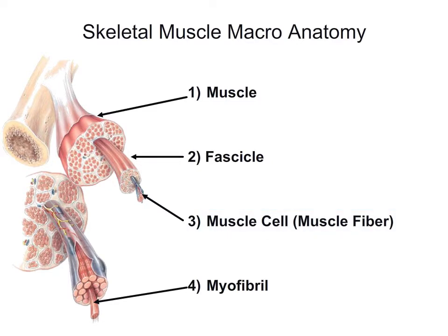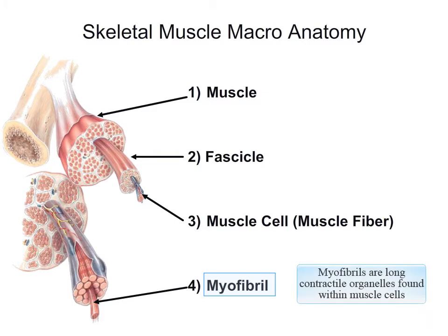If we zoom in on that muscle cell, we can see it contains units called myofibrils. Myofibrils are specialized organelles found within skeletal muscle, and their job is to contract. Each muscle fiber or cell will contain lots of these long myofibrils.